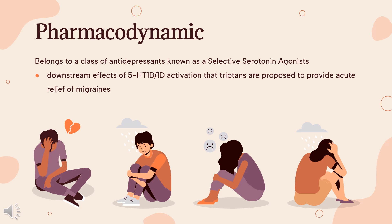Zolmitriptan is also a vasoconstrictor, leading to possible adverse cardiovascular effects such as myocardial ischemia/infarction, arrhythmias, cerebral and subarachnoid hemorrhage, stroke, gastrointestinal ischemia, and peripheral vasospastic reactions. In addition, chest/throat/neck/jaw pain, tightness, and/or pressure has been reported, along with the possibility of medication overuse headaches and serotonin syndrome. Patients with phenylketonuria should be advised that Zomig-ZMT contains phenylalanine.